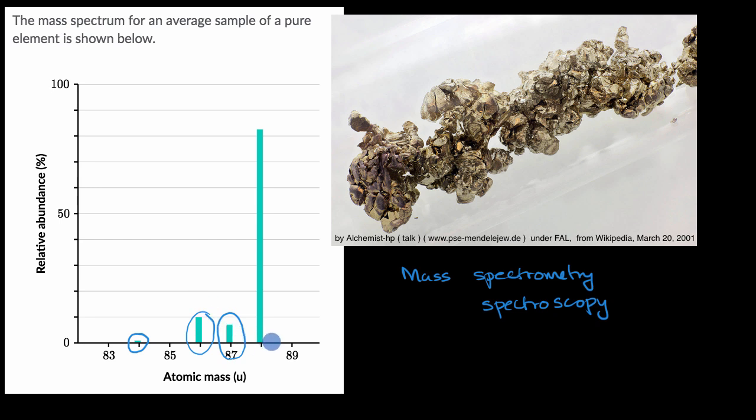And then we have another isotope that has an atomic mass of 87 universal atomic mass units. And then the bulk of our sample is the isotope. So you could say the most common isotope in our sample right over here. It looks like it's about 82 or 83% of our sample has an atomic mass of 88 universal atomic mass units.